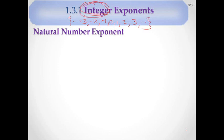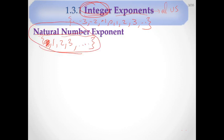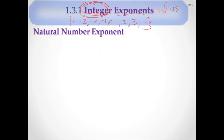Now, natural number exponents. The natural numbers are 1, 2, 3, and so on — the counting numbers. We will see what a natural exponent means.